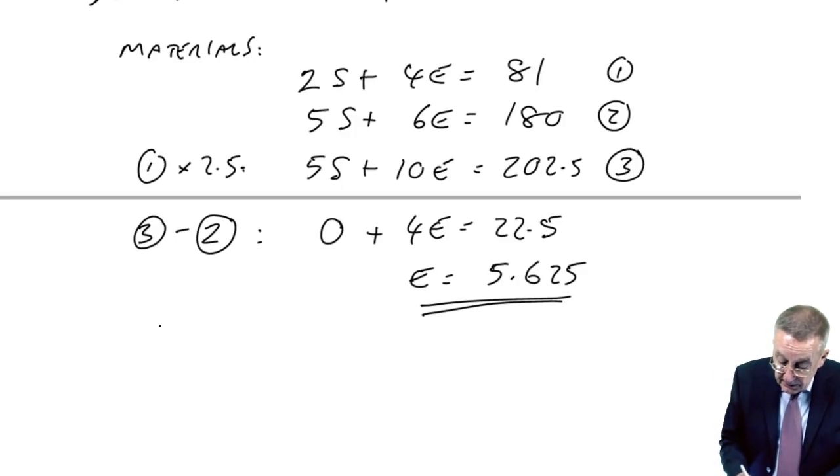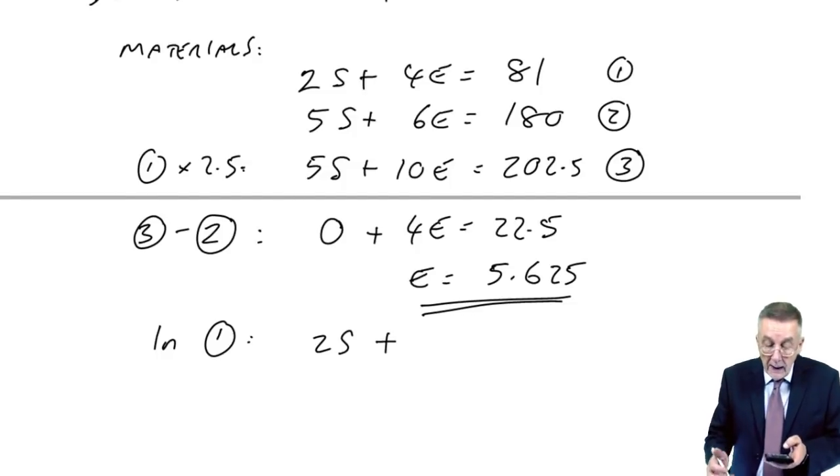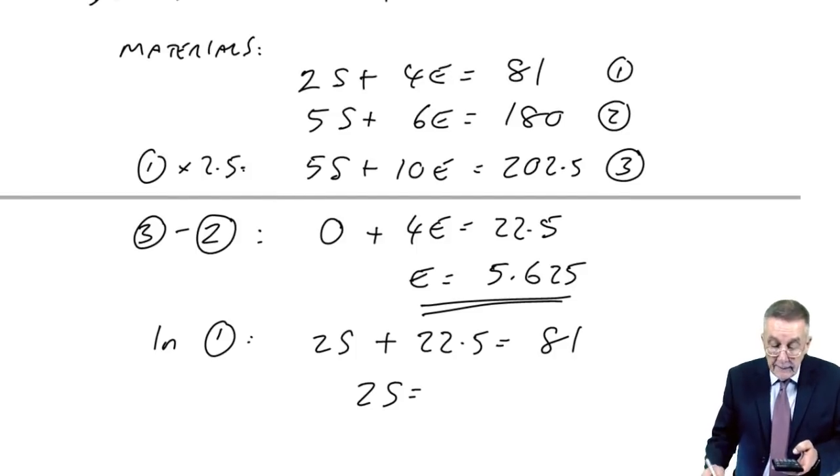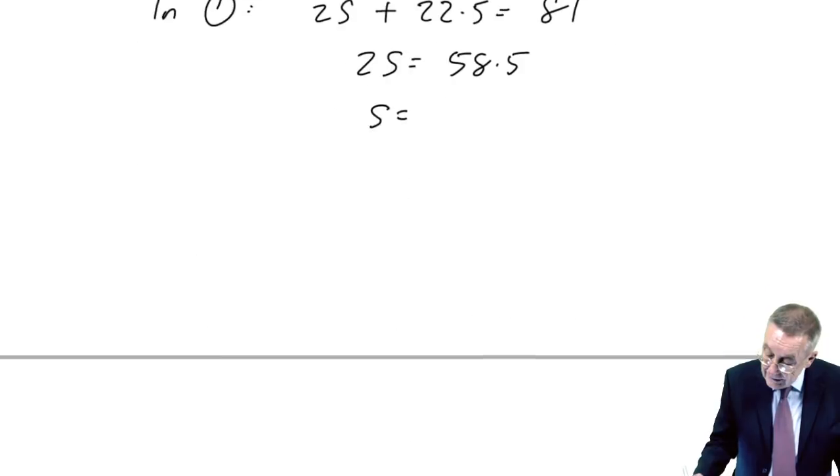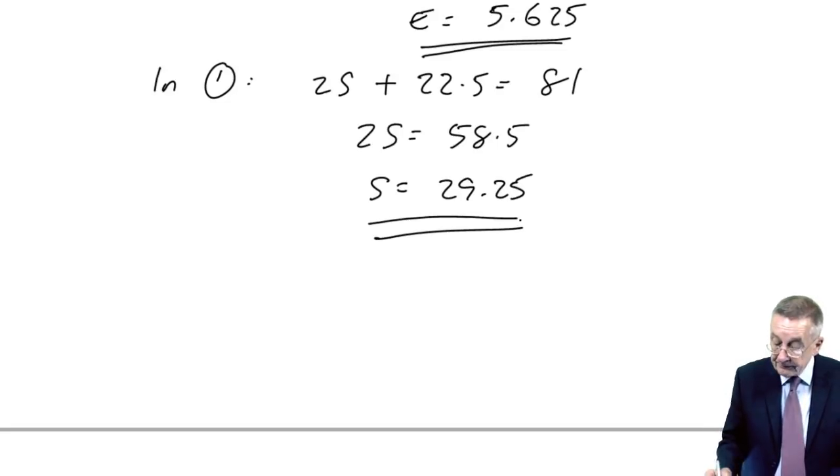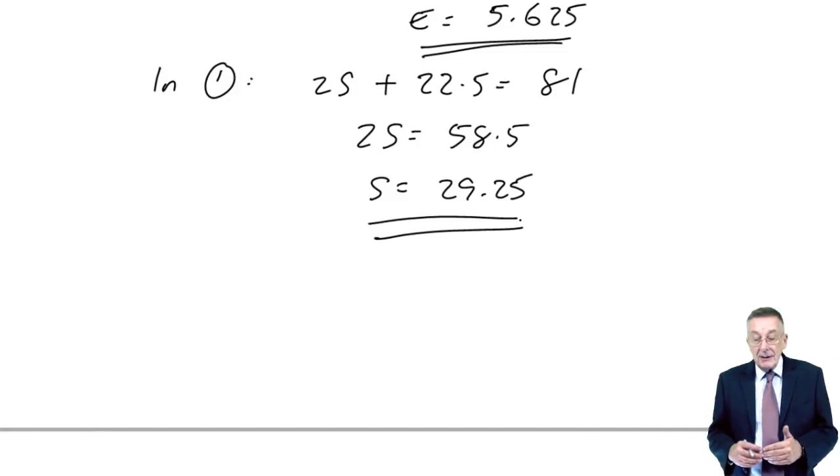What about S? Well, like before, if I substitute in the first equation, 2S plus 4E, 4 times 5.625 is 22.5 equals 81. 2S therefore subtract 22.5 from both sides is 58.5. S therefore is 29.25. And so what's happened if we did have one extra kilo, we end up being able to make slightly more E's and slightly fewer S's. But what would happen to the contribution?